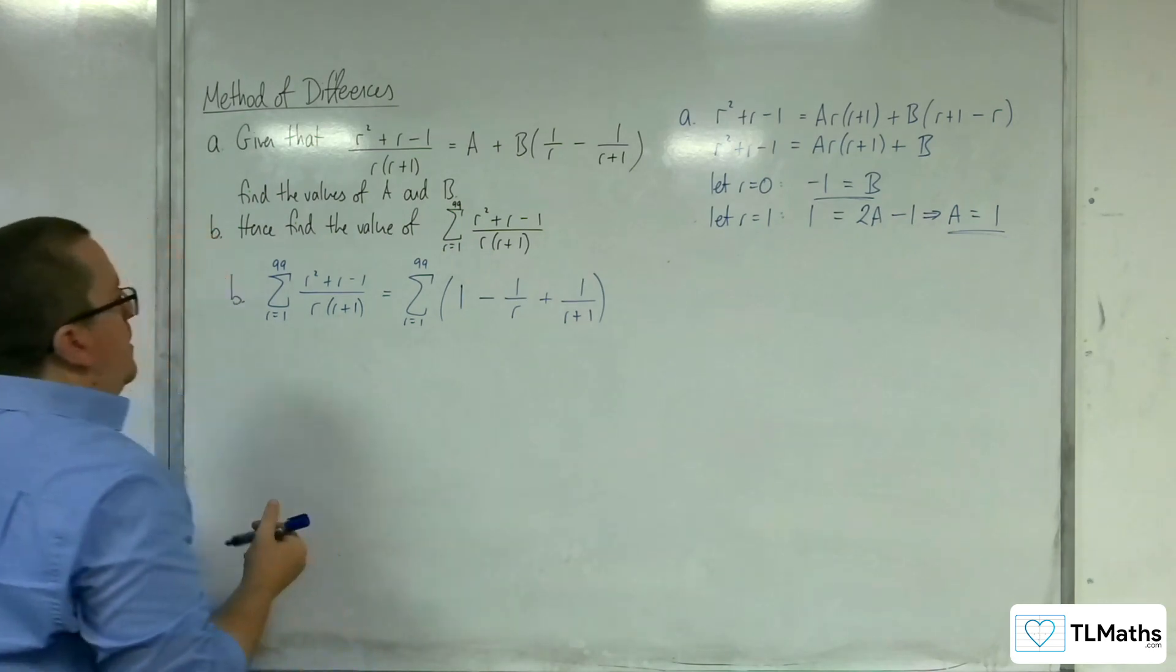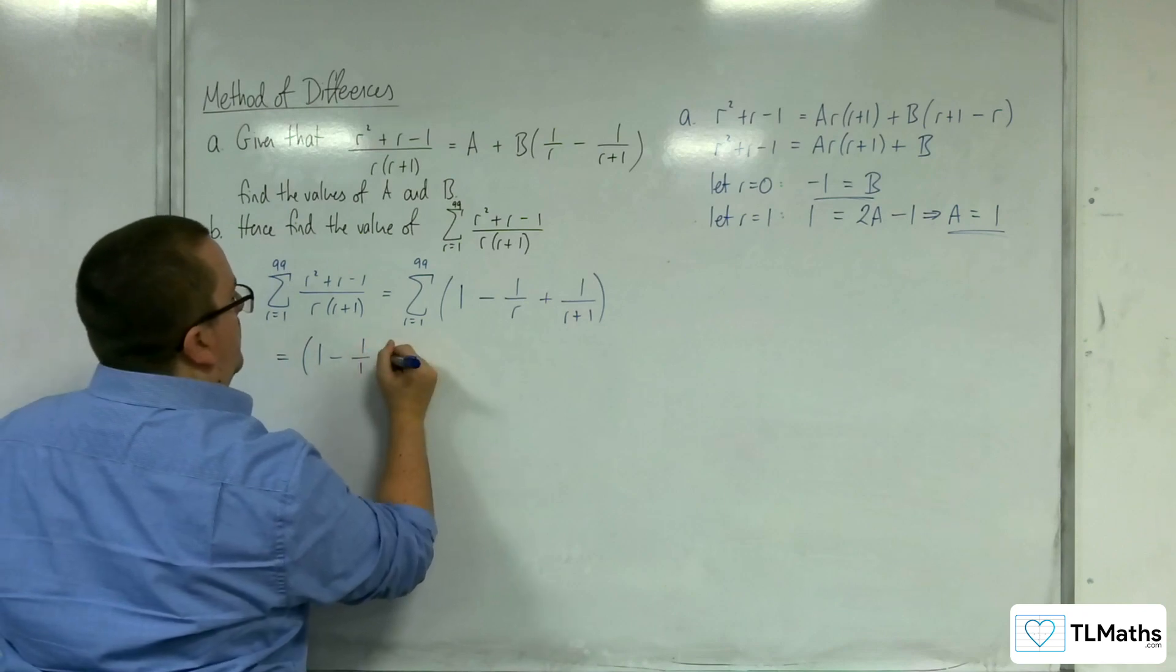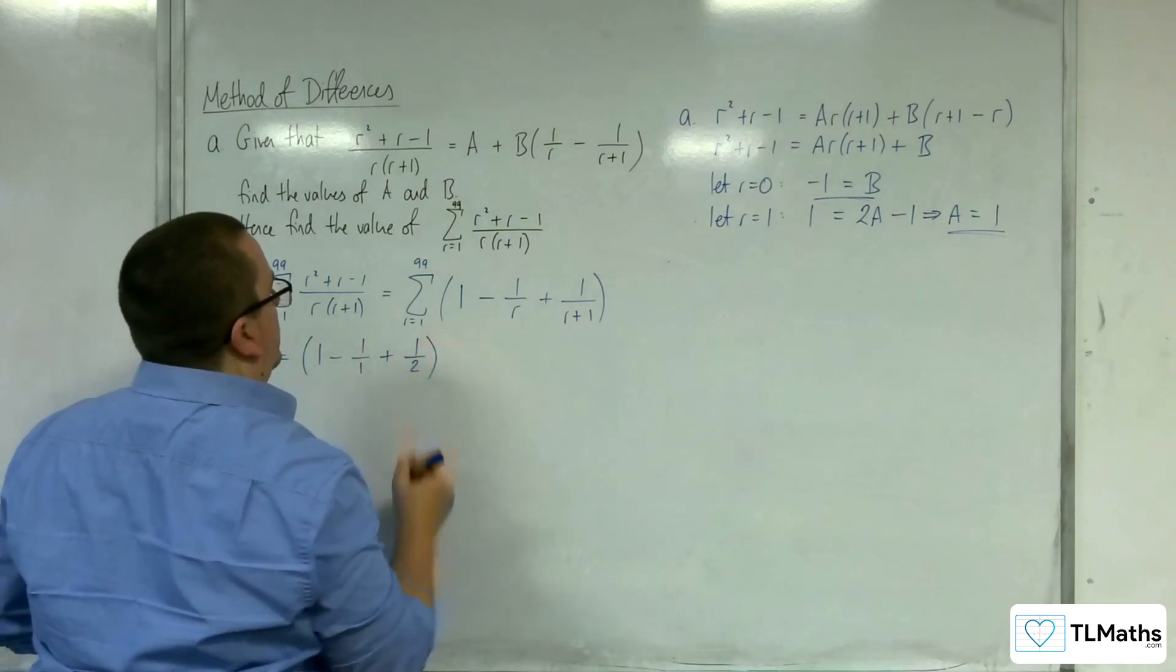So let's start substituting numbers in. So when r is 1, we're going to have 1 take away 1 over 1 plus 1 over 2.